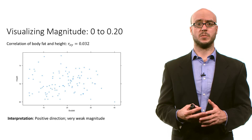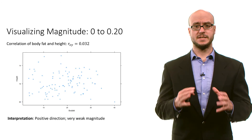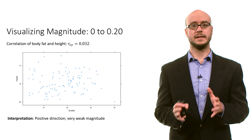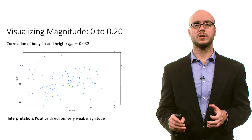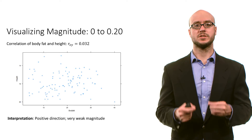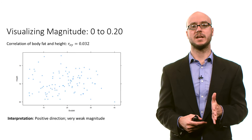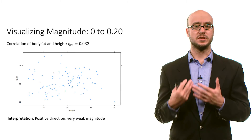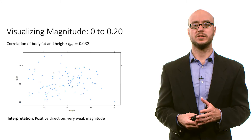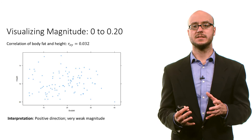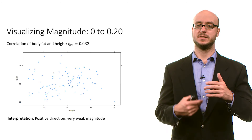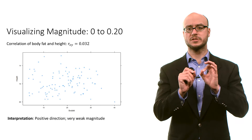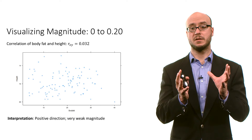Let's look at a few examples from our data set of individuals. We can calculate different scatter plots and different correlation coefficients. Here's a correlation between body fat percentage and a person's height — it's 0.032. Using this set of guidelines, this is a very weak magnitude, but it is a positive direction, and this is also reflected in the scatter plot.